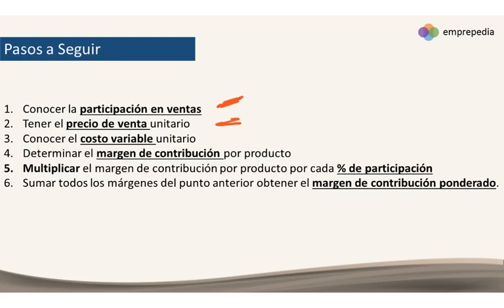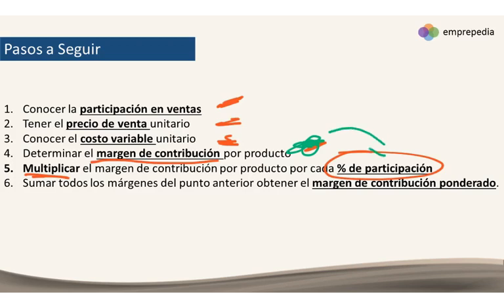Como ya tenemos el precio de venta, necesitamos conocer el costo variable unitario de cada uno de los productos. Si restamos el precio de venta menos el costo variable, ya tenemos un margen de contribución, al igual que en el punto de equilibrio normal. Después vamos a incorporar ese porcentaje de participación — ojo, debemos pasarlo a decimales — y lo vamos a multiplicar por el margen de contribución obtenido.